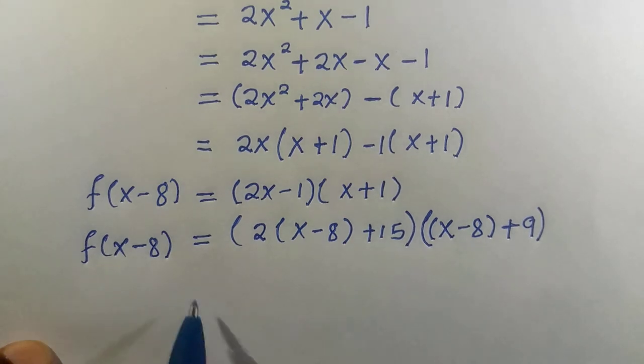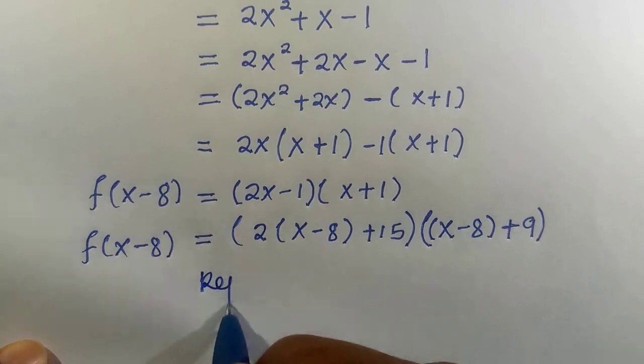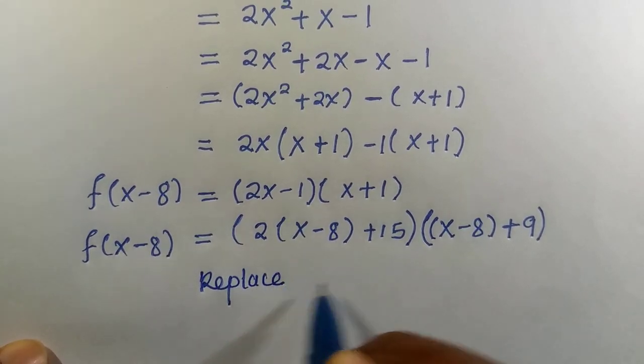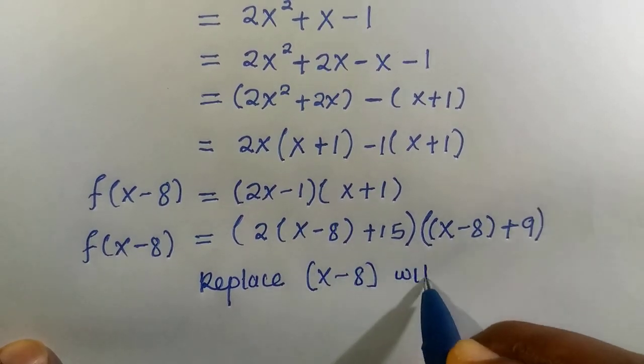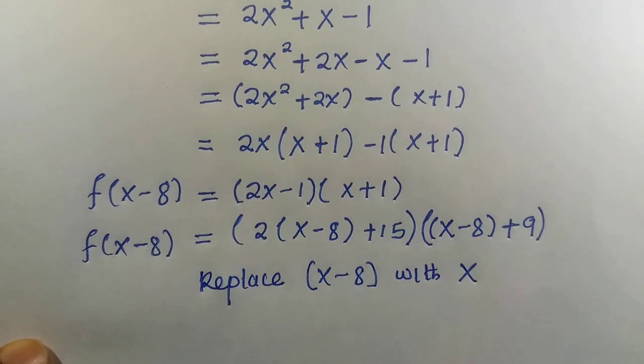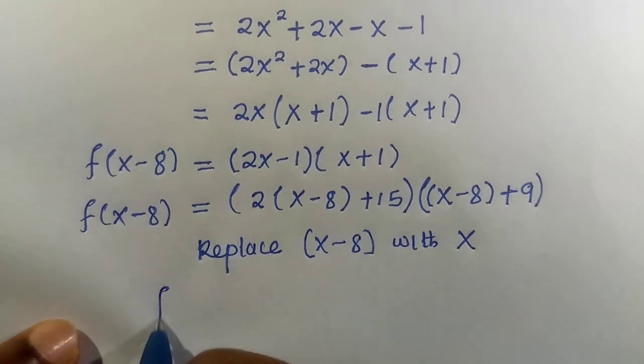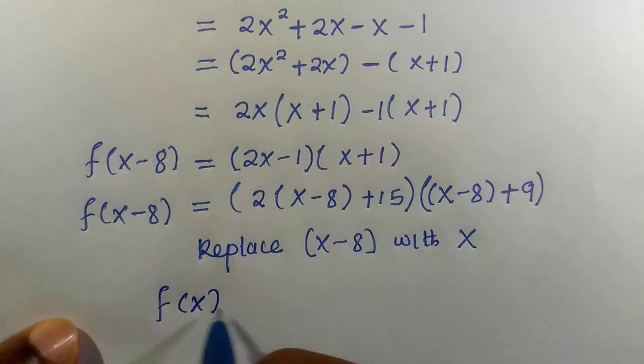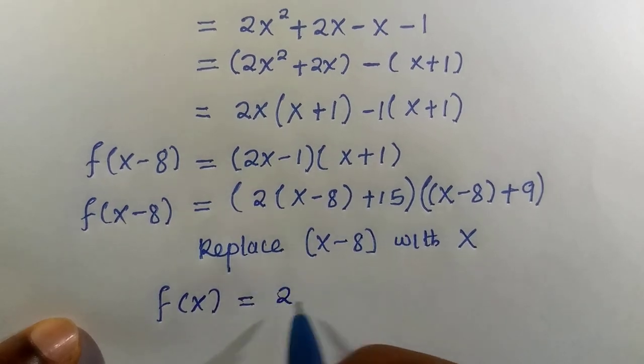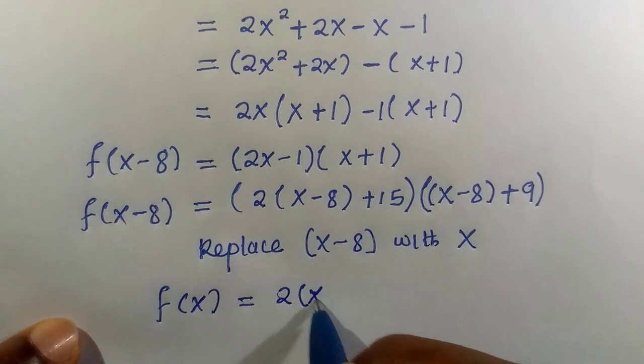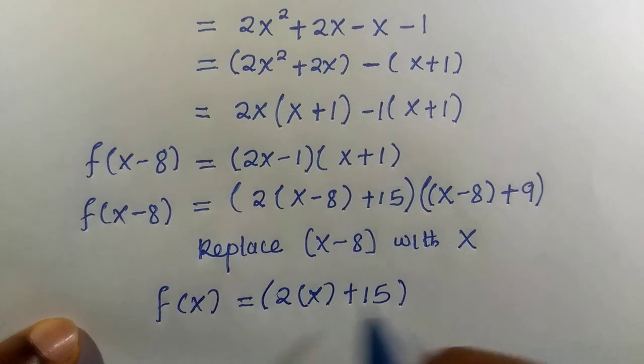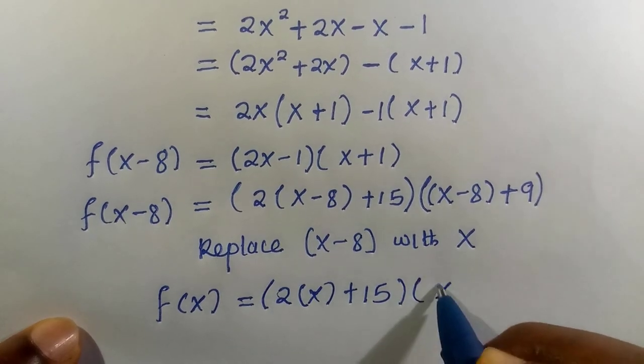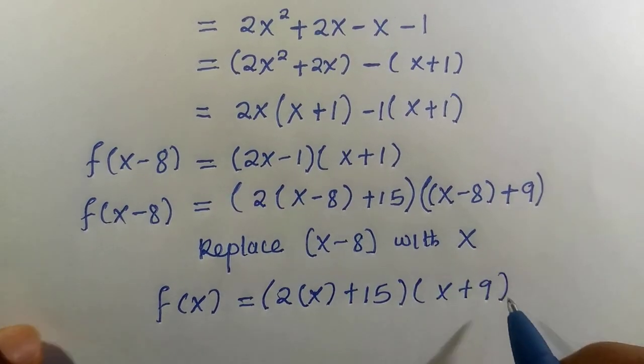To get what we need, since we are looking for f(x), we just try to replace. When we replace x - 8 with what we need, which is x, we get it as f(x) = (2(x) + 15)(x + 9).